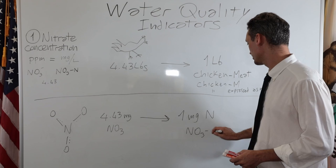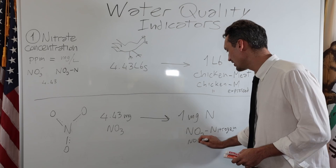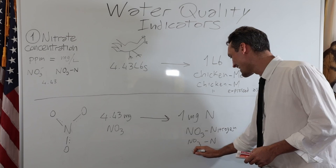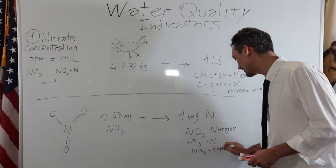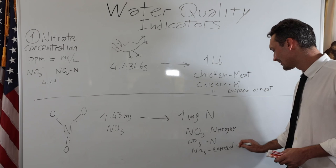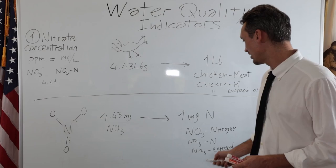And so you can say, you can call this NO3 nitrogen. Or you can say NO3-N, just like here we say M for meat. Or you can also say NO3 expressed as nitrogen. And you will see written in these various ways, and this is what they mean.